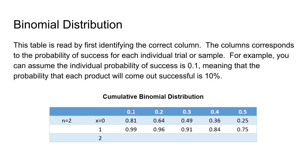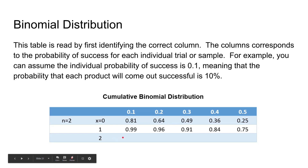You also need to identify the correct number of samples n. For n equals 2, this means the coin is being flipped twice. The probability that none of them are a success — x equals 0 — is read from that row. The probability that there is no success or one success is 0.99, and the probability that there is no success, one success, or two successes is equal to 1, though it is typically left blank.